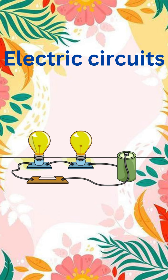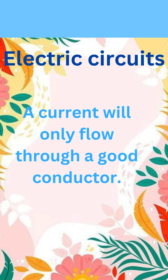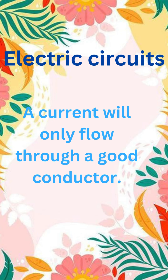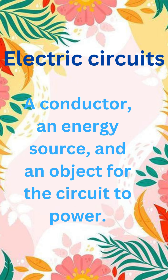Electric circuits. An electric circuit is an unbroken loop of conducting material along which an electric charge may flow. A current will only flow through a good conductor. There are three basic components in an electric circuit: a conductor, an energy source, and an object for the circuit to power.